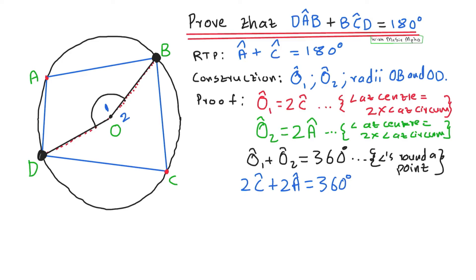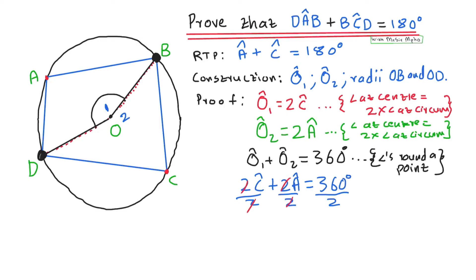Now I have 2C plus 2A equals 360, but I only want A and C. So I divide all terms by 2 — the twos cancel — and I'm left with angle C plus angle A equals 360 divided by 2, which is 180 degrees.